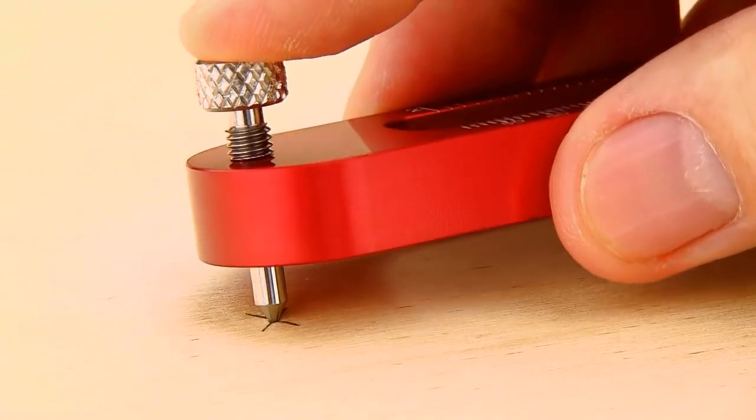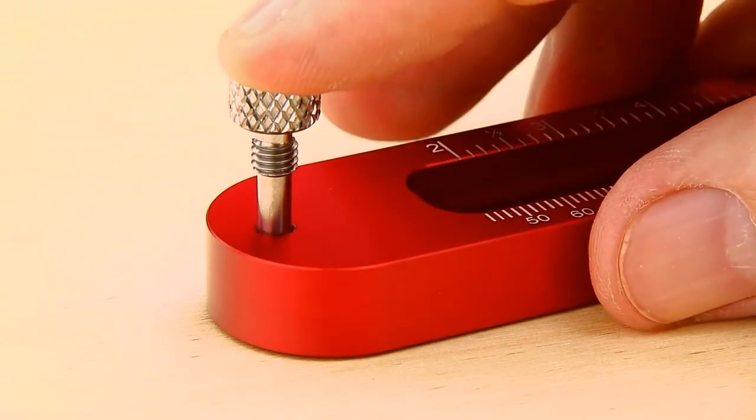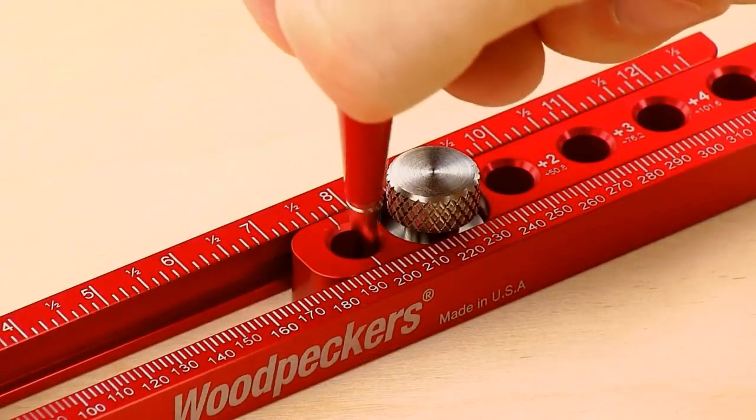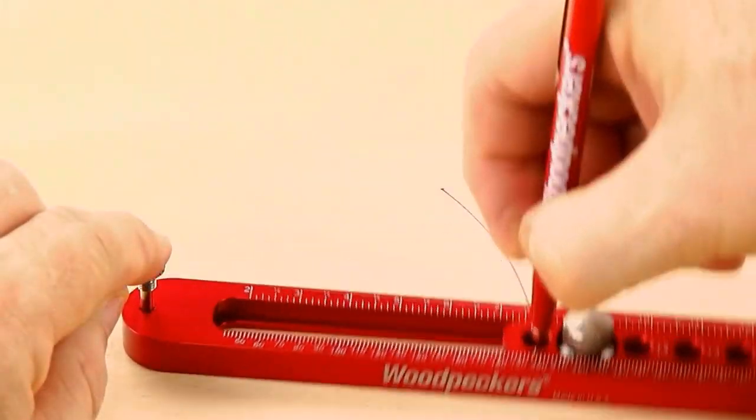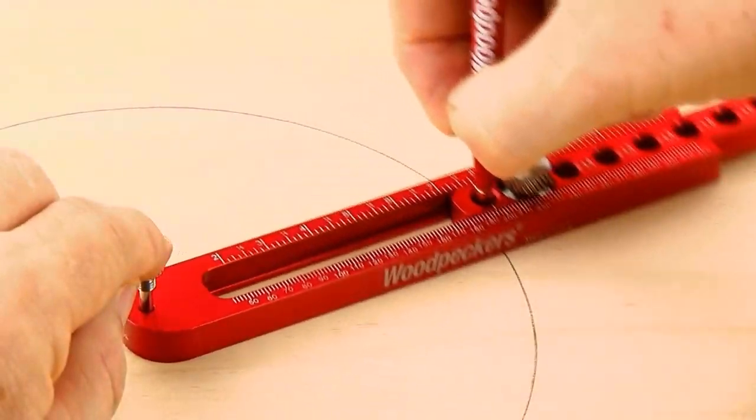To draw your circle or arc, simply insert the center pin on one end and a mechanical pencil in the first tapered hole on the other. Swing the compass to draw your circle or arc and you're done.